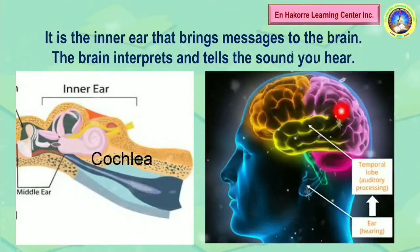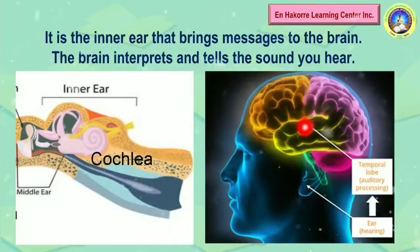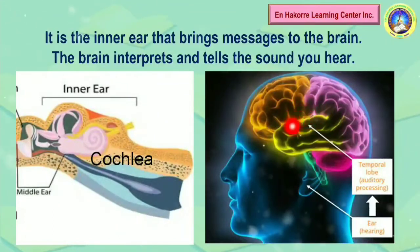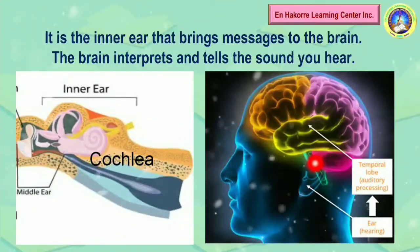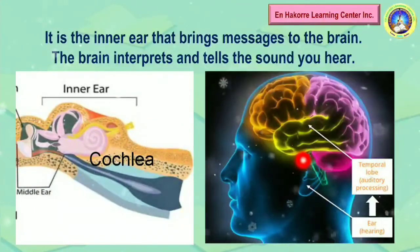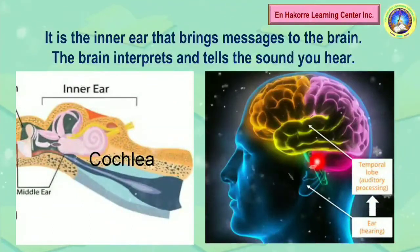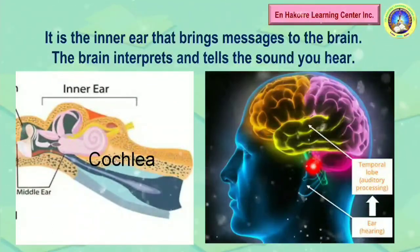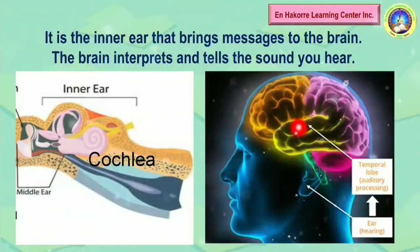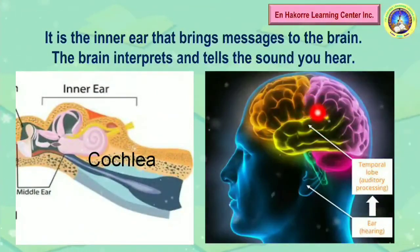So if it is a bird singing, your brain will tell you that it's a bird you have heard. If it is the wind blowing or voices talking outside, you can identify those sounds because your brain interprets and tells you what sound you hear from outside.